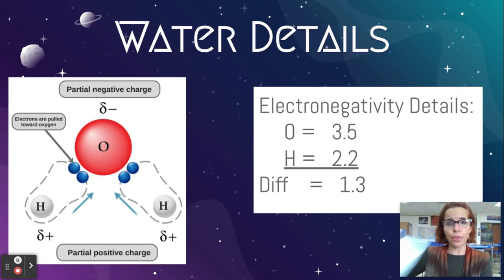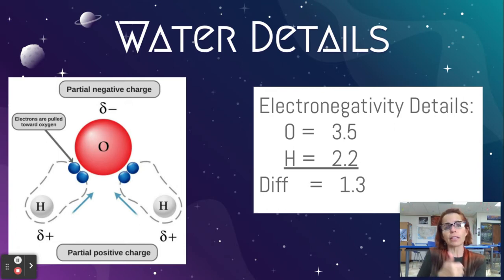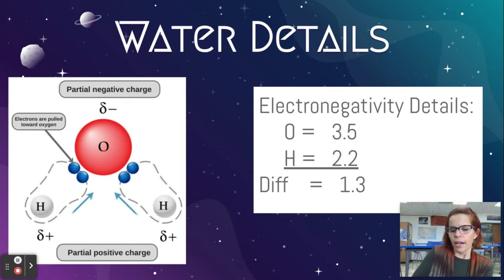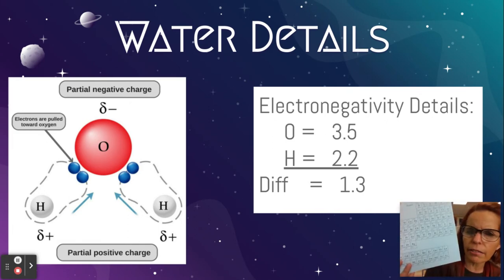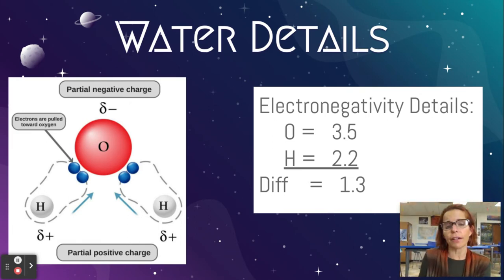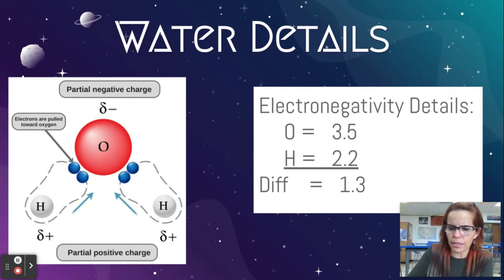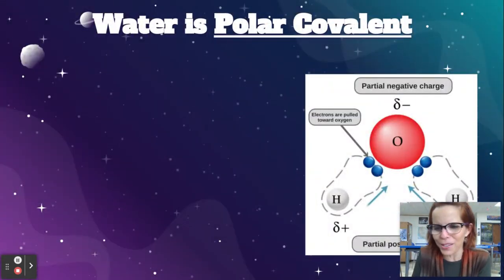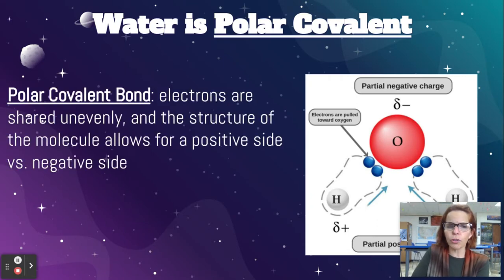That makes the oxygen slightly negative, and it makes each of the hydrogens slightly positive. If you do the math from your electronegativity table, the electronegativity of oxygen is 3.5 and of hydrogen is 2.2. So the difference is 1.3, and that falls at the actually quite high end of the polar covalent bonds. These tables you might find on the internet have slightly different numbers, so let's just stick to the one that I give you so we're all playing with the same numbers.